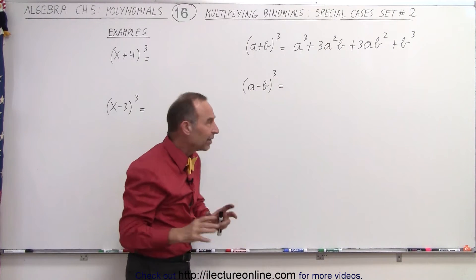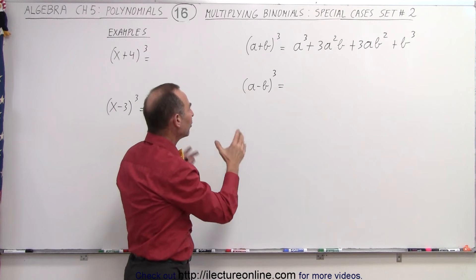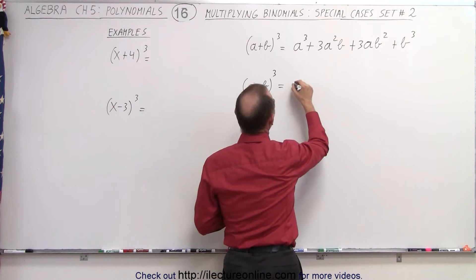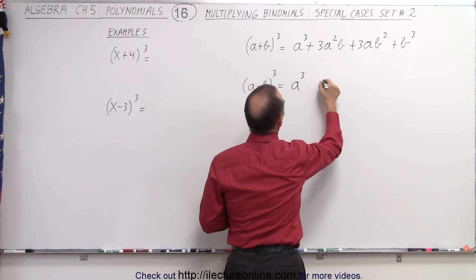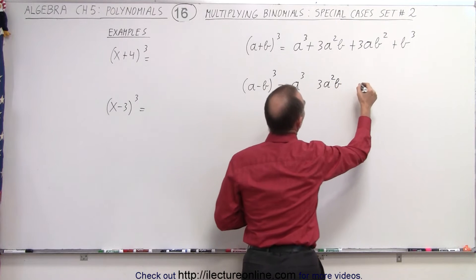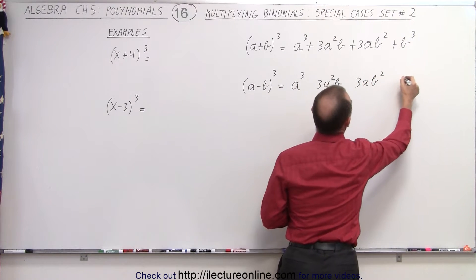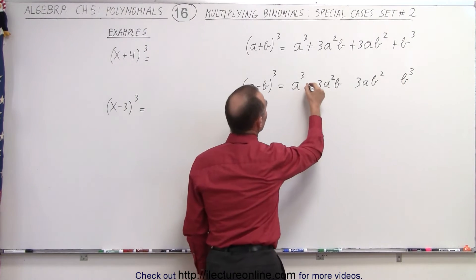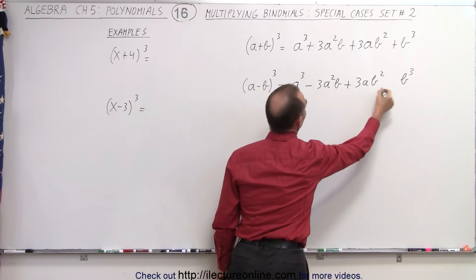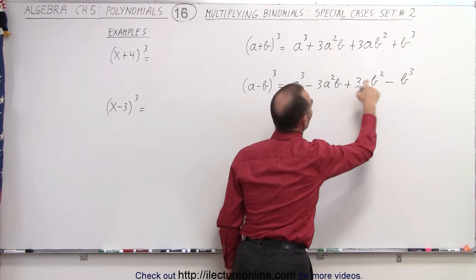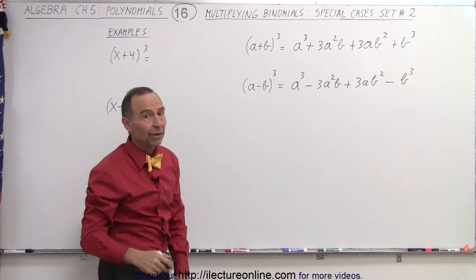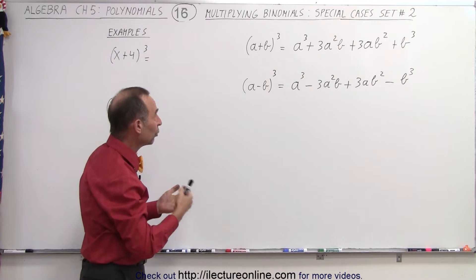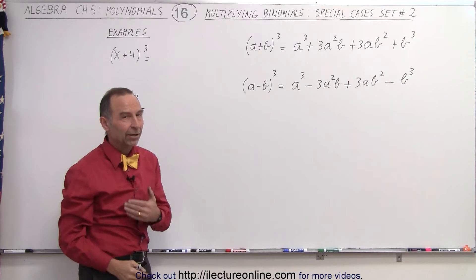It's almost exactly the same for the second example, a minus b quantity cubed, except we have to alternate the signs. So it'll become a cubed, three a squared b, three a b squared, and b cubed. And now we simply alternate signs: positive, negative, positive, negative. So exactly the same, except that the signs are slightly different. If you remember that approach to solving these binomials cubed, it'll save you a lot of time.